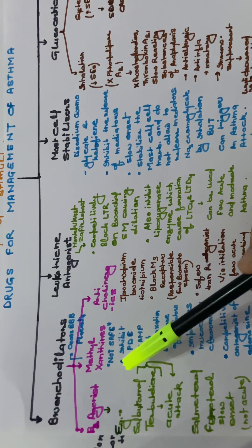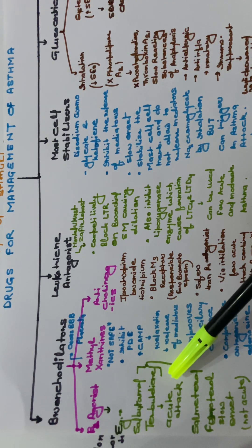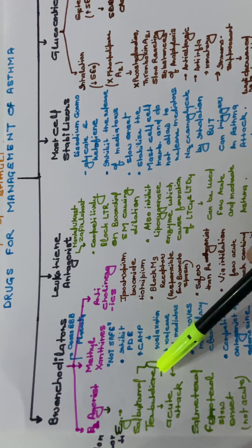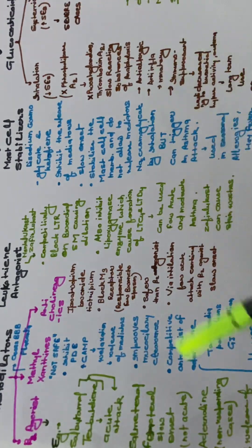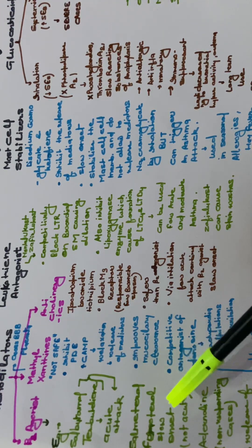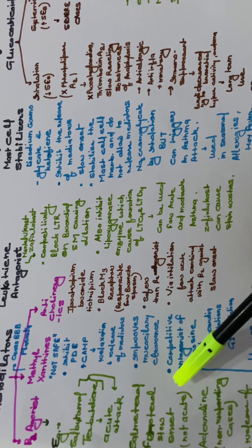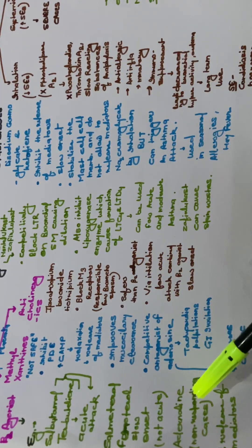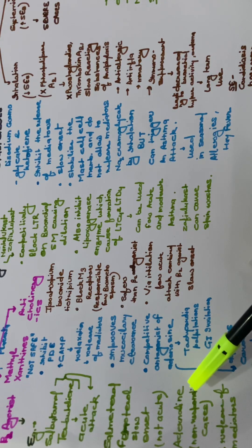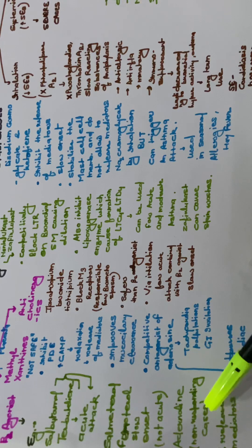Beta-2 agonists are salbutamol and terbutaline. They are used in the acute attack of asthma. They are shorter acting drugs which can be used for a short time period. Salmeterol and formoterol are the drugs of slow onset that cannot be used during the acute attack. They are longer acting drugs. Adrenaline is also a beta agonist used during the asthmatic attack. It is used in non-responding cases. It decreases the release of mediators.